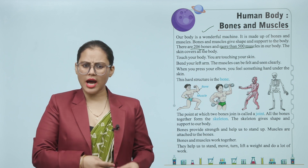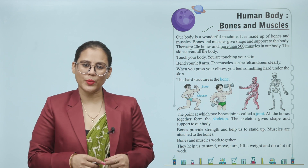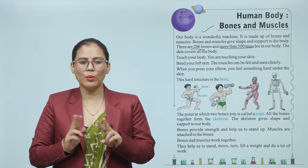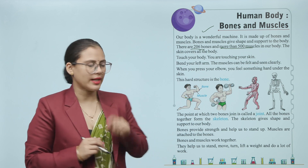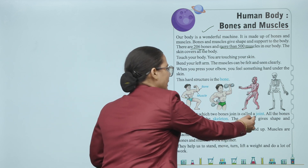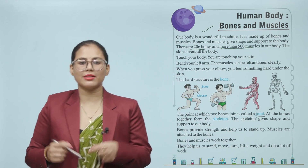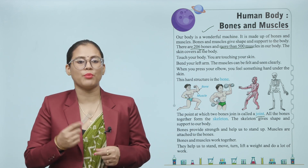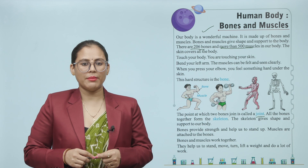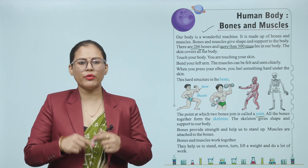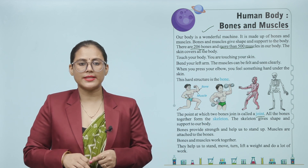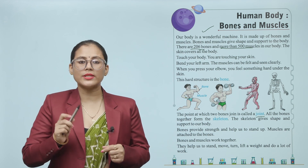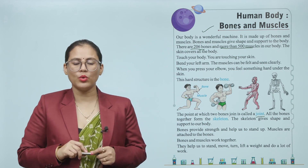They help us to stand, move, turn, lift a weight, and do a lot of work. Look at this point — where two bones meet, that is called a joint. All the bones together form the skeleton, which gives our body its shape and support. Bones provide strength and help us to stand up. Muscles are attached to the bones, and bones and muscles work together.